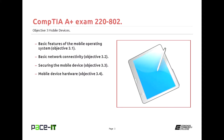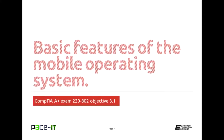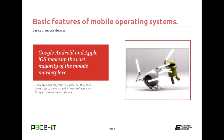So what is Objective 3? It's all about mobile devices, and it has four sub-objectives. The first one is the mobile operating system. The second portion is basic network connectivity with mobile devices, then we have how to secure your mobile device, and then mobile device hardware. Let's begin by talking about the mobile operating system.